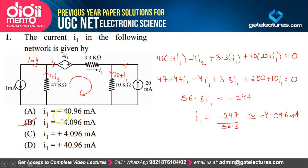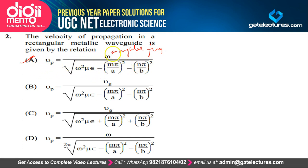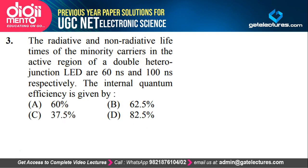The next question is theoretical — they are asking for the formula for velocity of propagation in a rectangular metallic waveguide. The formula is given by option A: phase velocity VP is expressed using angular frequency omega, constants mu and epsilon, and dimensions A and B of the rectangular waveguide, with M and N as mode numbers. VG is group velocity, and phase velocity and group velocity are not related by the same formula. The correct answer is option A.